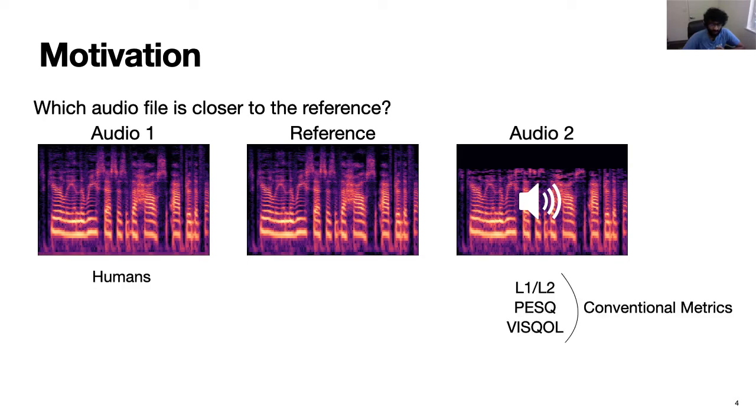However, all conventional metrics like L1, L2, PESQ, and VISQOL actually chose audio 2. So hereby we see that these metrics don't correlate well with human perceptual judgments. So the question is, can we build a perceptual metric which reliably agrees more often with humans?